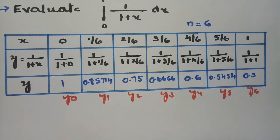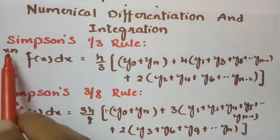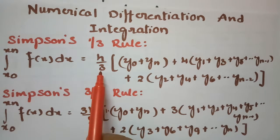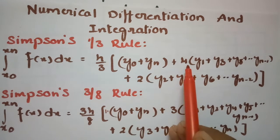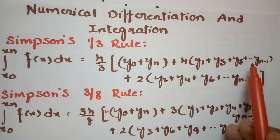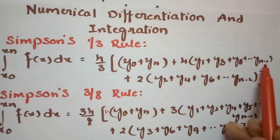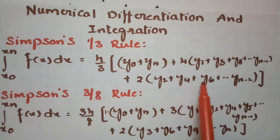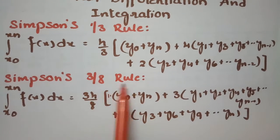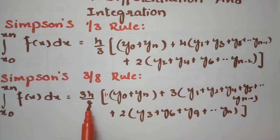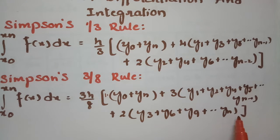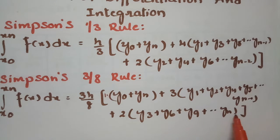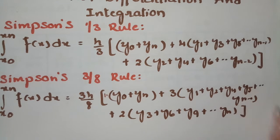According to Simpson's 1/3 rule, the integral from x0 to xn of f(x) dx equals h/3 times: the sum of the first and last ordinates, plus 4 times the sum of all odd ordinates (y1, y3, y5, ...), plus 2 times all the even ordinates. According to the 3/8 rule, we multiply h by 3/8, add y0 and yn, plus 2 times all multiples of 3 (y3, y6, ...), plus 3 times the rest.